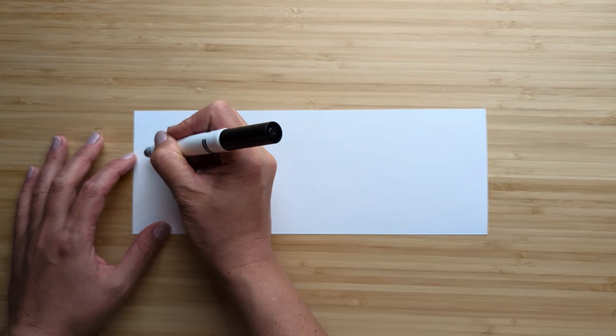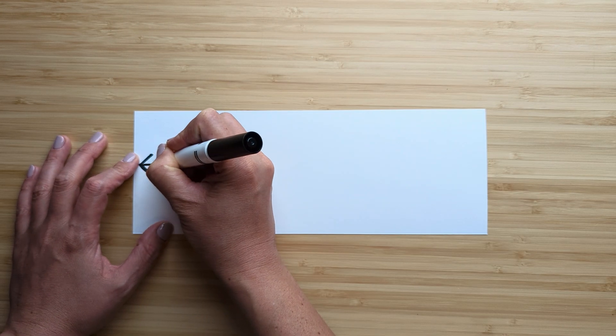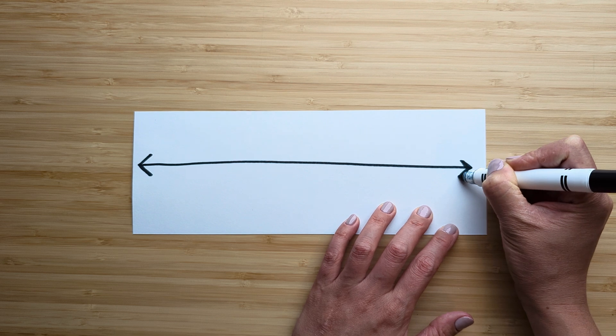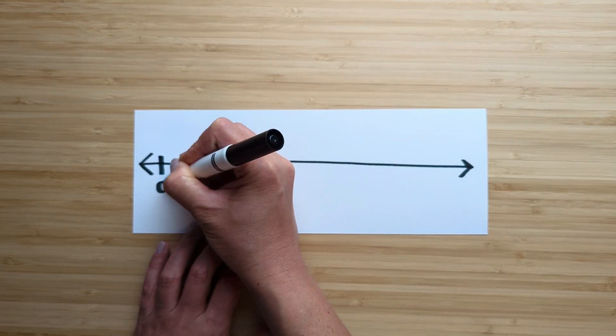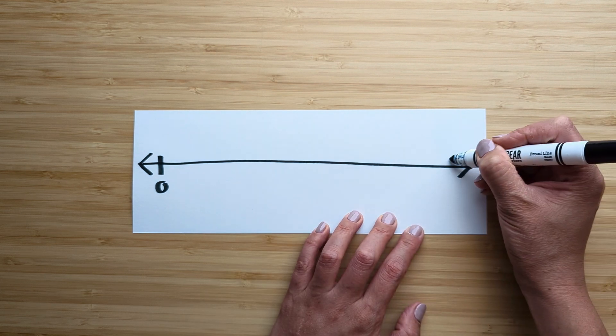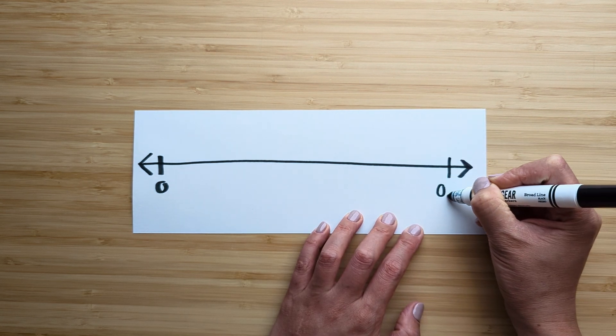So let's draw a number line. And we're going to label it from zero to one tenth.